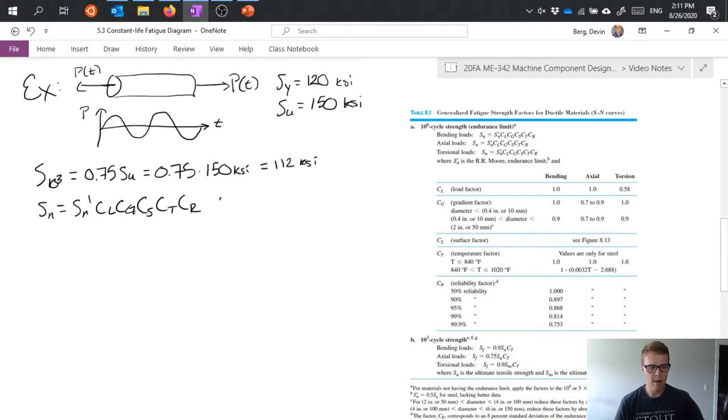Well S'N prime and I've pulled in table 8.1 from the textbook because it provides useful insight to basically all of this information. S'N prime gives us right down here in this small little bullet at the bottom which says S'N prime equals 0.5 Su for steel lacking better data. So it's kind of a generic answer when we don't have more specific information. 0.5 Su. So coming back to my equation then I'm going to plug in 0.5 times 150.